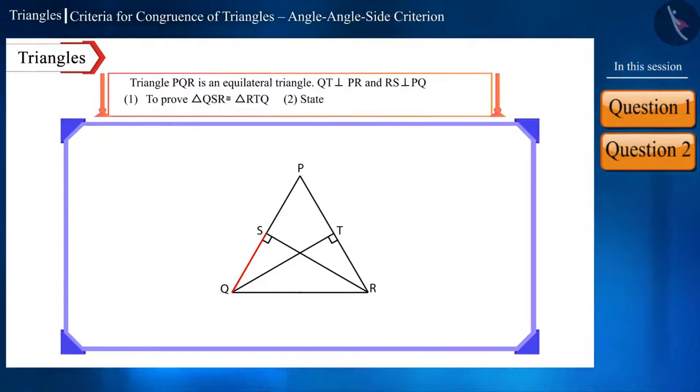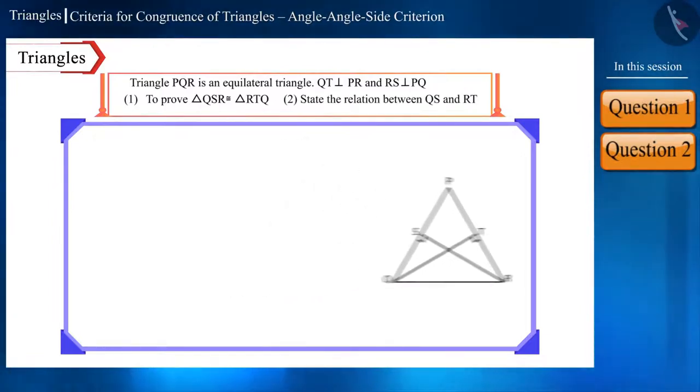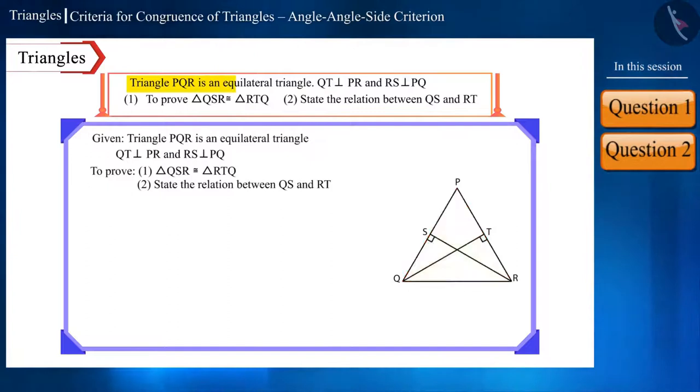We are given that triangle PQR is an equilateral triangle. That is, all its angles will be equal. We can also write angle Q as angle SQR and angle R as angle TRQ.